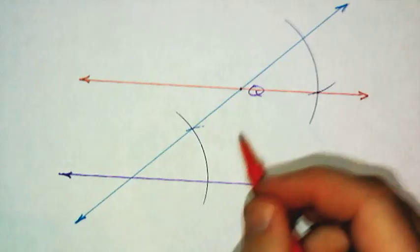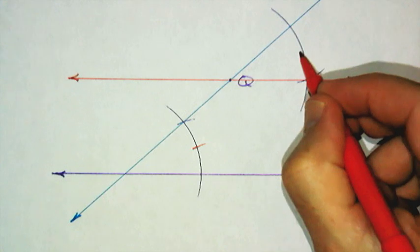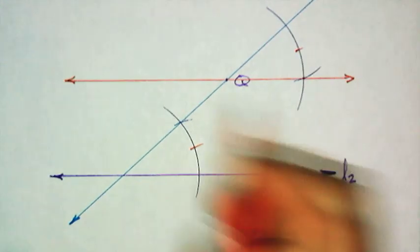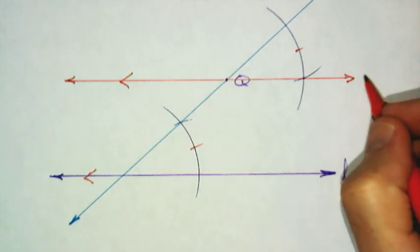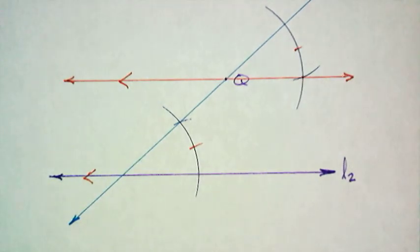And since this angle is congruent to this angle, those corresponding angles, now, my two lines are indeed parallel. So, they're the two methods for constructing a parallel line through a given point, not on the line.